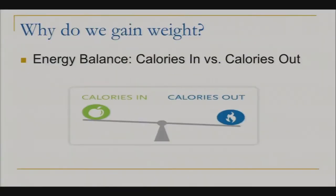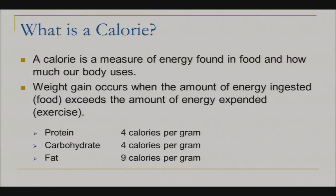Welcome to part 6 of the Nutrition and Weight Loss class. This section covers weight gain and maintenance calories. So why do we gain weight? It's all about an energy balance — calories in versus calories out. But what exactly is a calorie? A calorie is a measure of energy found in food, and it's how much our body uses.